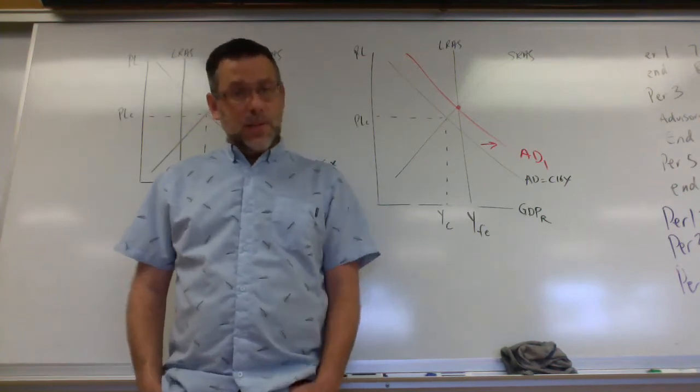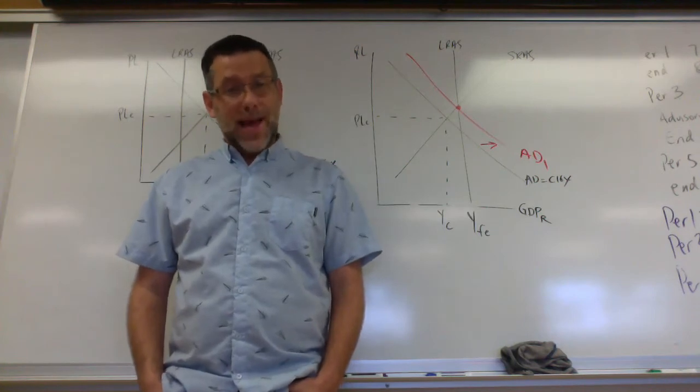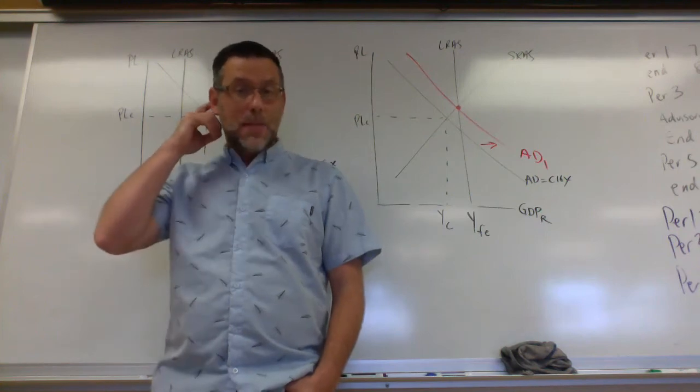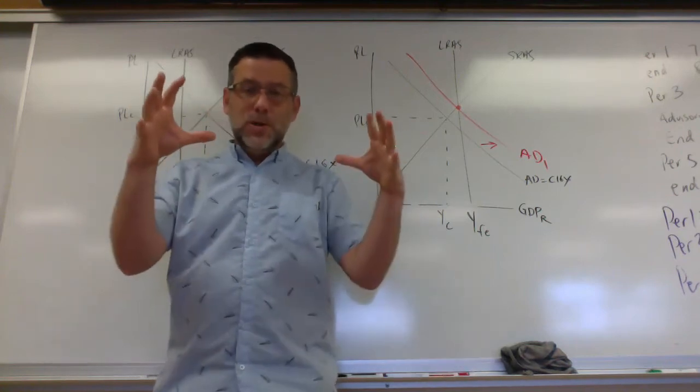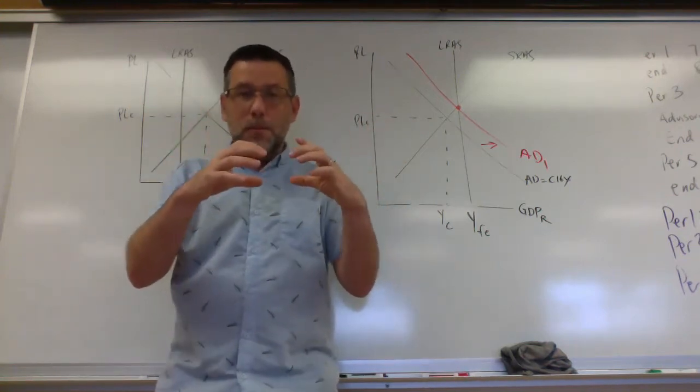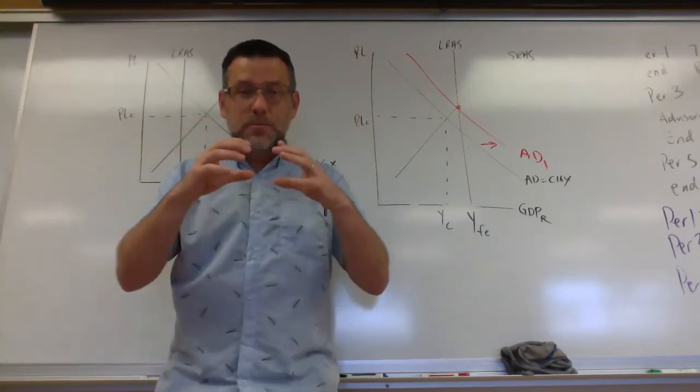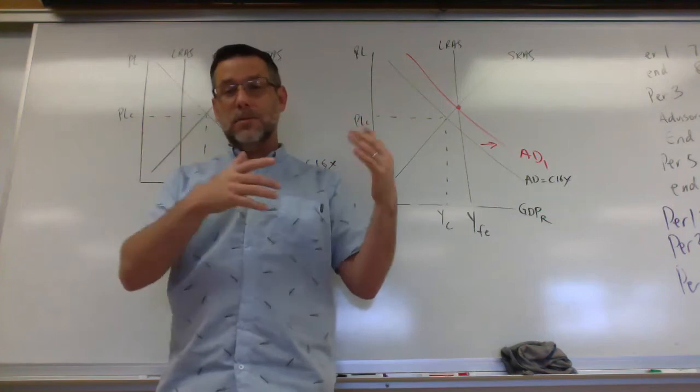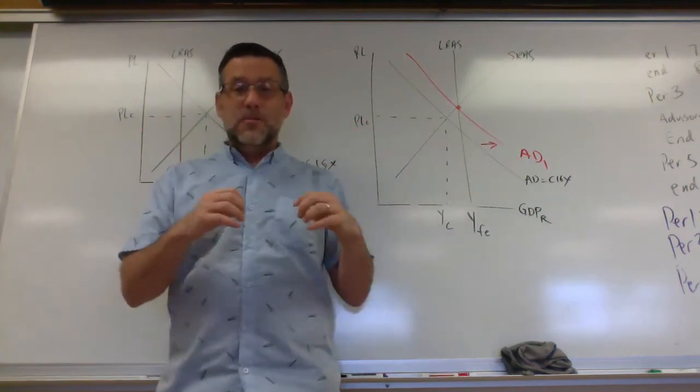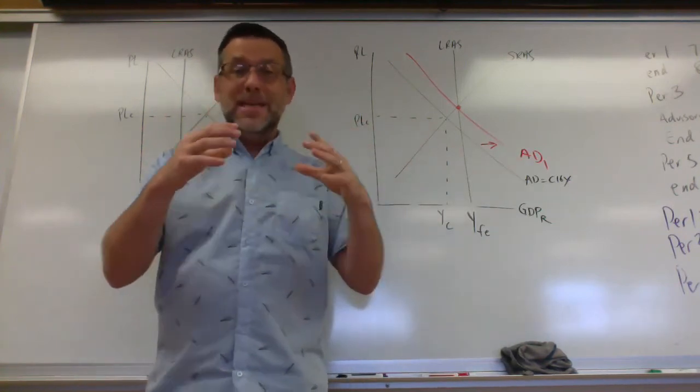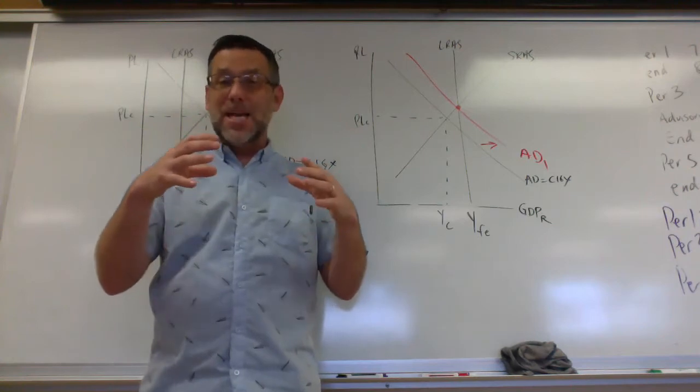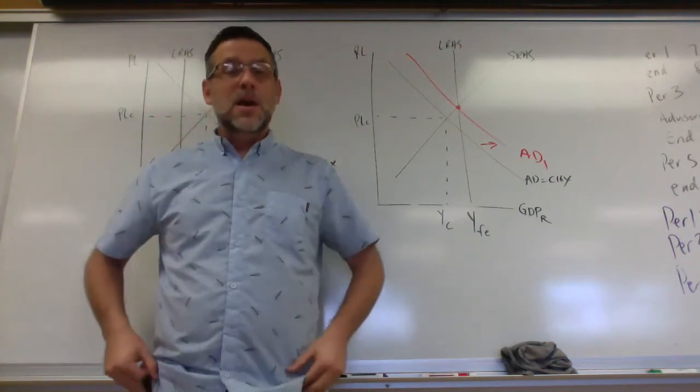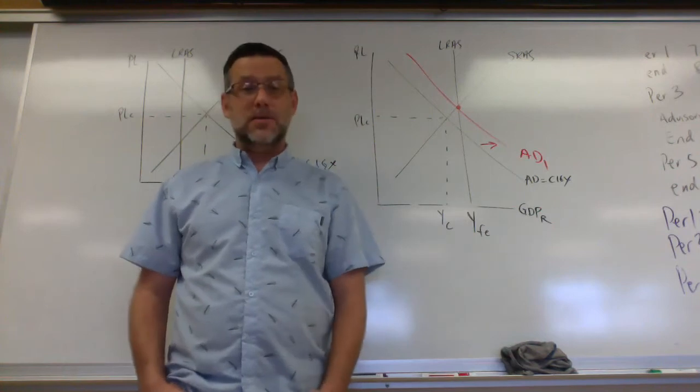We call this expansionary fiscal policy. When the government spends more money or cuts taxes to expand aggregate demand to close the gap. You can think of our economy as being like a balloon. And when we have a recession, the balloon is too small, and we want to blow it up to get it to the right size, we need to expand it by putting more air into it. Same thing. But instead of putting more air in, what we're doing is we're putting more money into the economy, more money that blows the balloon up or expands it. Expansionary fiscal policy closes that recessionary gap and gets us back to full employment.